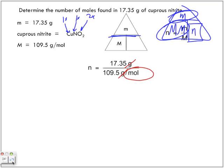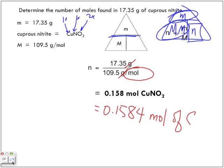What's the least number of significant digits in my question? There are four, it's the only number that I have, so my answer must have four significant digits. So we've got 0.158, but that's how many significant digits? Three. And so, actually, if we go up that, 0.1584 moles of cuprous nitrite.